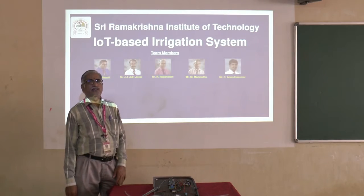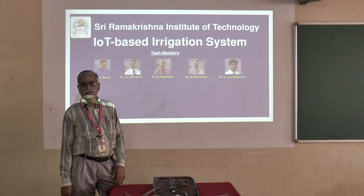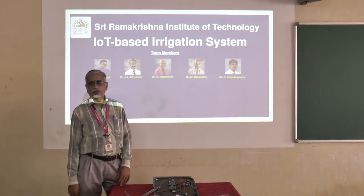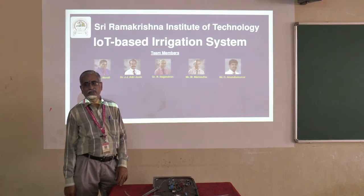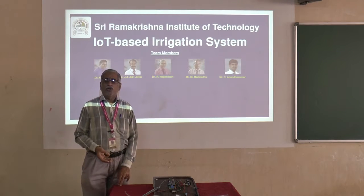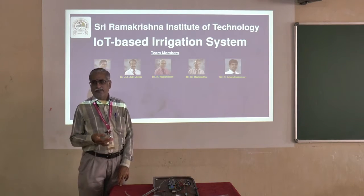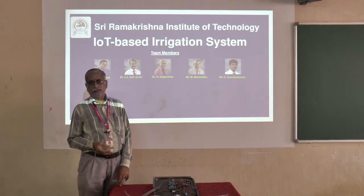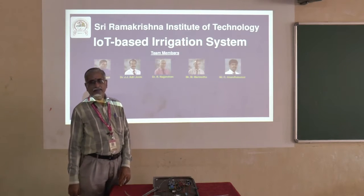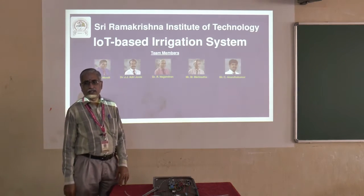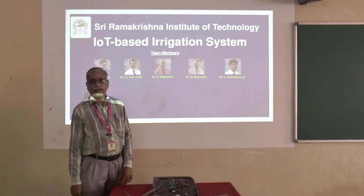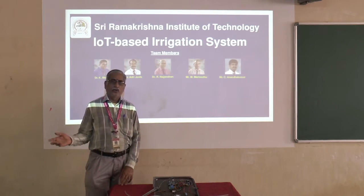Optimizing water usage is the only solution for irrigation. In an IoT-based irrigation system, a smart irrigation system uses machine learning and open-source technologies to predict soil moisture. Parameters include temperature, soil temperature, air temperature, and relative humidity for the agricultural field in and around the south taluk.